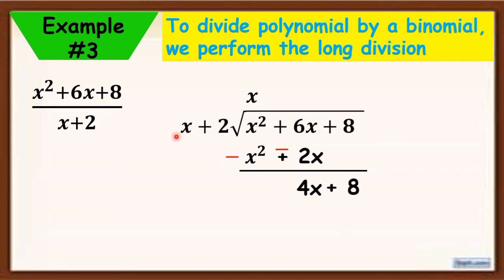4x divided by x equals 4. Then, 4 times x plus 2 equals 4x plus 8, because 4 times x is 4x and 4 times 2 is 8. Now, change the sign so it will become 0 here. 4x minus 4x is 0, and 8 minus 8 is 0 also.